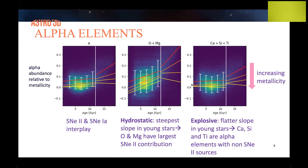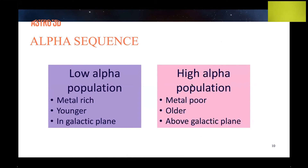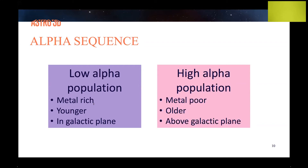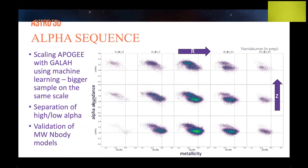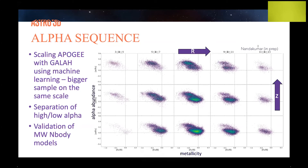The alpha elements illustrate how we can tell different stories about how galaxies evolved just by looking at these trends. The alpha sequence is an important marker of two distinct populations. The low-alpha population contains stars that are generally more metal-rich, younger, and located in the galactic plane. The high-alpha population is metal-poor, older, and located above and below the galactic plane. Work being done by a colleague shows the distribution of these two sequences as we move out to the outer galaxy and above and below the plane, using machine learning to put different samples onto a common scale — and we can see the two populations are nicely separated.